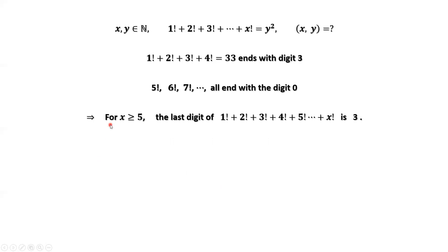We have the following result. For x is bigger than or equal to 5, the last digit of 1 factorial plus 2 factorial plus 3 factorial plus x factorial is 3. Why? Because the sum of the first four terms ends with the last digit 3.